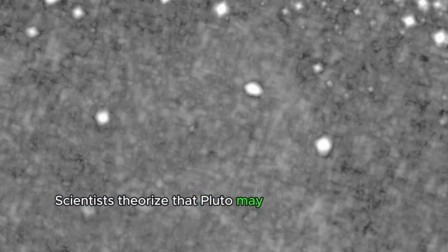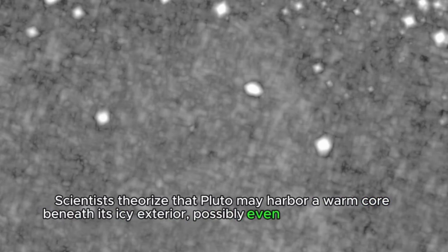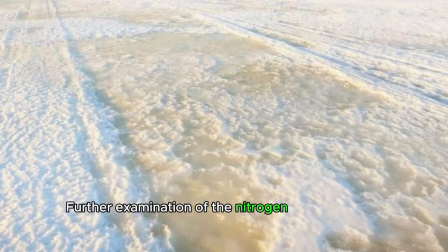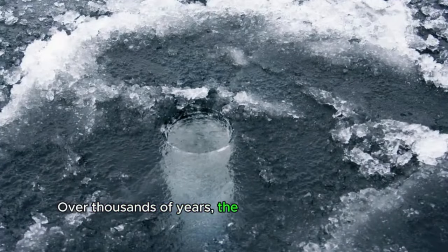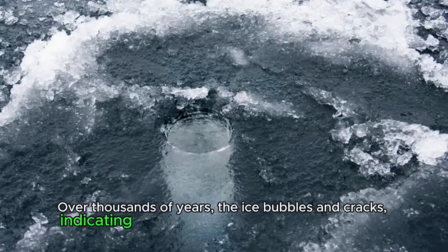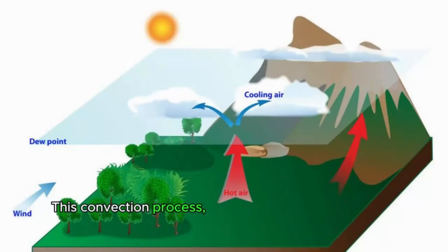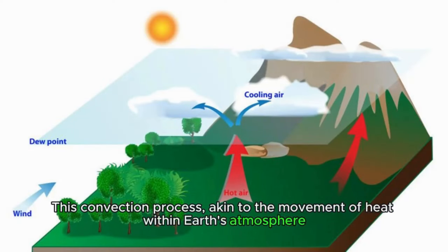Scientists theorize that Pluto may harbor a warm core beneath its icy exterior, possibly even hosting an ocean of water beneath the surface. Further examination of the nitrogen ice revealed a surprising phenomenon: bubbling. Over thousands of years, the ice bubbles and cracks, indicating heat escaping from beneath the surface. This convection process, akin to the movement of heat within Earth's atmosphere or on the surface of the Sun, provides insight into Pluto's internal dynamics.